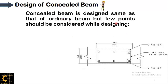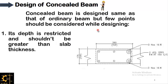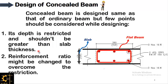Concealed beam is designed the same as an ordinary beam, but a few points should be considered. First, its depth is restricted and should not be greater than the slab thickness. Second, the reinforcement ratio might be changed to overcome this restriction. Its depth is restricted — that is why it is called a concealed beam, slab beam, or flat beam — since its depth cannot be greater than the depth of the slab.